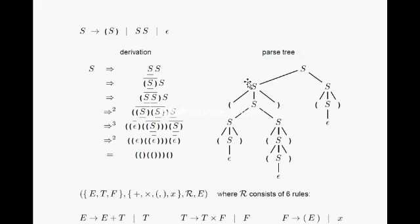The same derivation can be described using a parse tree. We start with s as the root, then divide s into two parts: s and s. The left s is replaced by s s, the right s is replaced by (s). That s becomes s s. Then using the rule s → ε, the left parenthesis s right parenthesis resolves, with s replaced by epsilon, and so on. Whatever our derivation is, we can represent it in a parse tree.